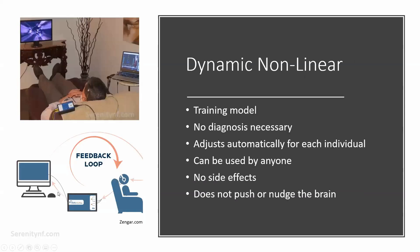Dynamical nonlinear neurofeedback, otherwise known as NeurOptimal, has been around for about 20 years. This type is a training model — it's not a targeted treatment or therapy. There's no diagnosis necessary and everyone can benefit regardless of their specific goals or diagnosis. The feedback adjusts automatically in real time for each individual, so the system can be safely used by anyone with no special expertise required. The system does not nudge or push the brain in any way — it merely provides feedback about what the brain is doing in real time.